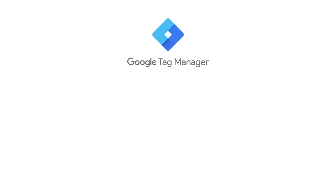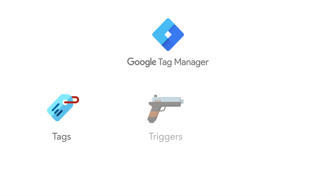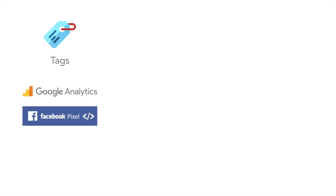Google Tag Manager is broken down into three core components: tags, triggers and variables. A tag represents a marketing script such as Google Analytics or the Facebook Pixel, but it's not only limited to just marketing scripts. You can handle other JavaScript layers or things such as web forms or even live chat widgets, and you can control and manage them through Google Tag Manager.